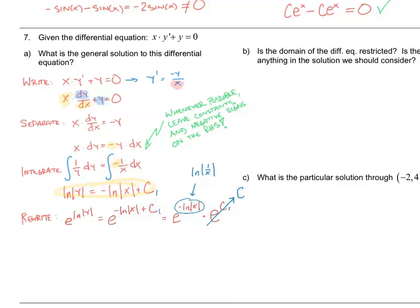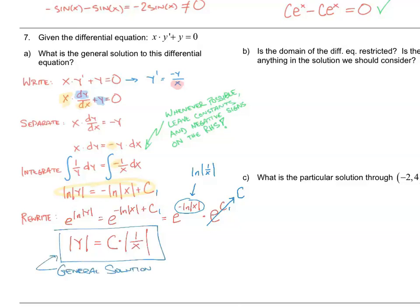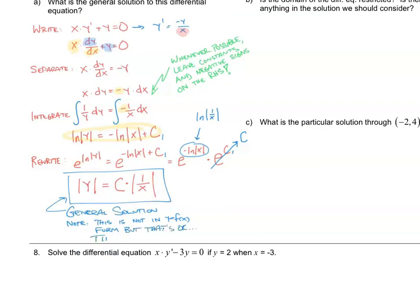e raised to the ln of the absolute value of y is just the absolute value of y, because e to the x and ln of x are inverses of each other. On the right-hand side, we have our constant c times e raised to the ln of the absolute value of 1 over x, which simplifies to c times the absolute value of 1 over x. This is our general solution, though it's not in y equals f of x form — but that's okay; it's the best we can do without more information.